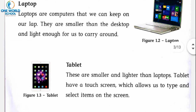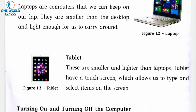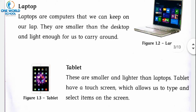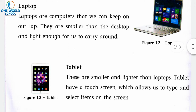The third type of computer is tablet. These are smaller and lighter than laptops. Tablets have a touchscreen which allows us to type and select items on the screen — वो laptop से भी ज्यादा small और light होते हैं। Tablet की screen touch screen होती है, यानि कि किसी भी function को use करना हो तो screen को touch ही करना होता है। Tablet is similar to the android phone — आपके घर पर जो android phone use करते हो उसके similar ही tablet होता है।